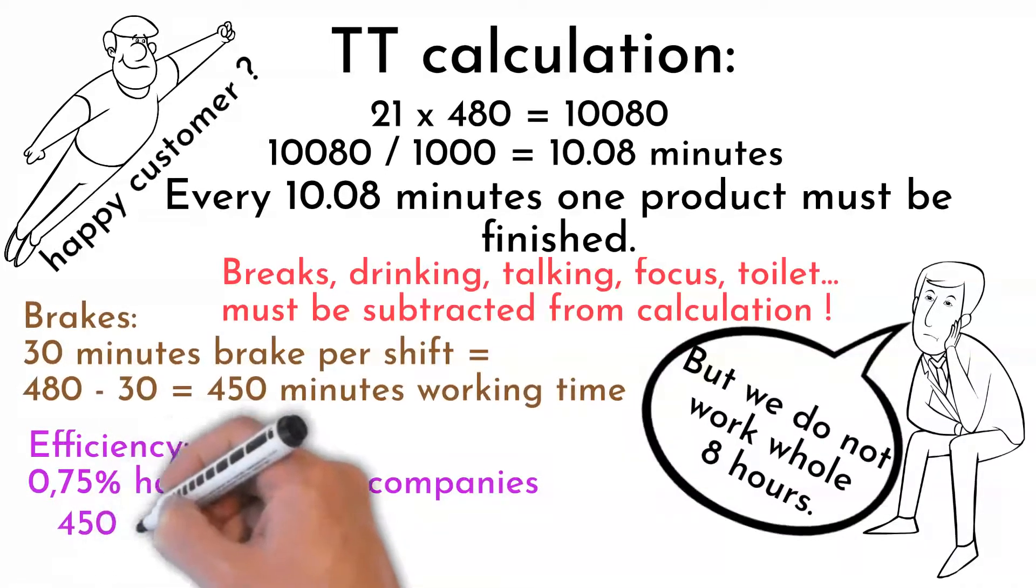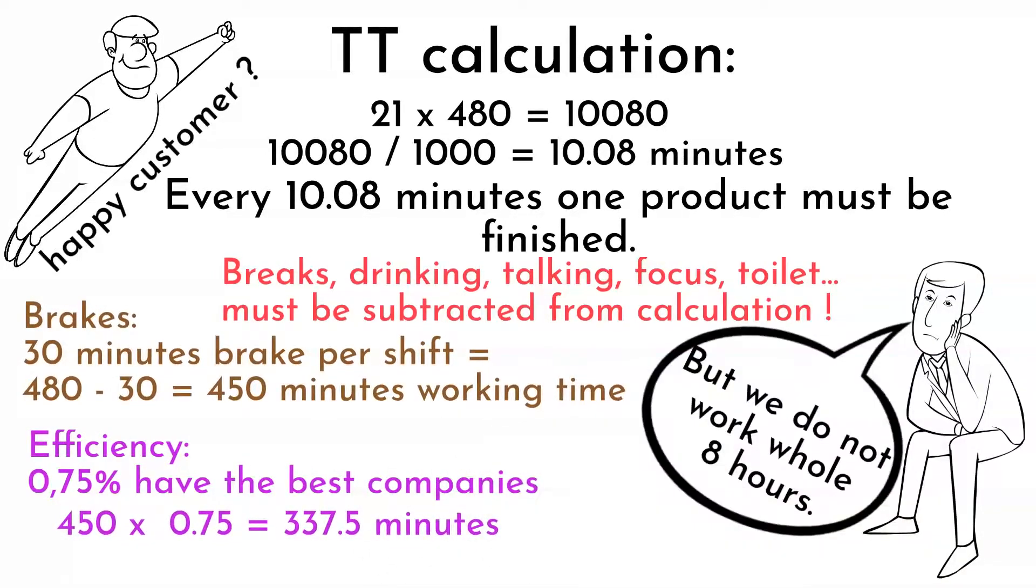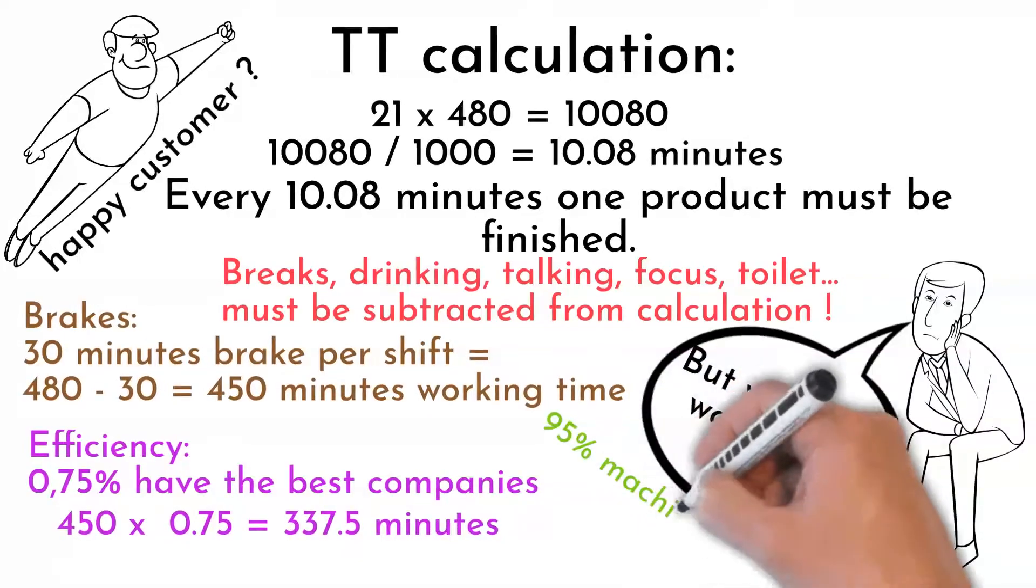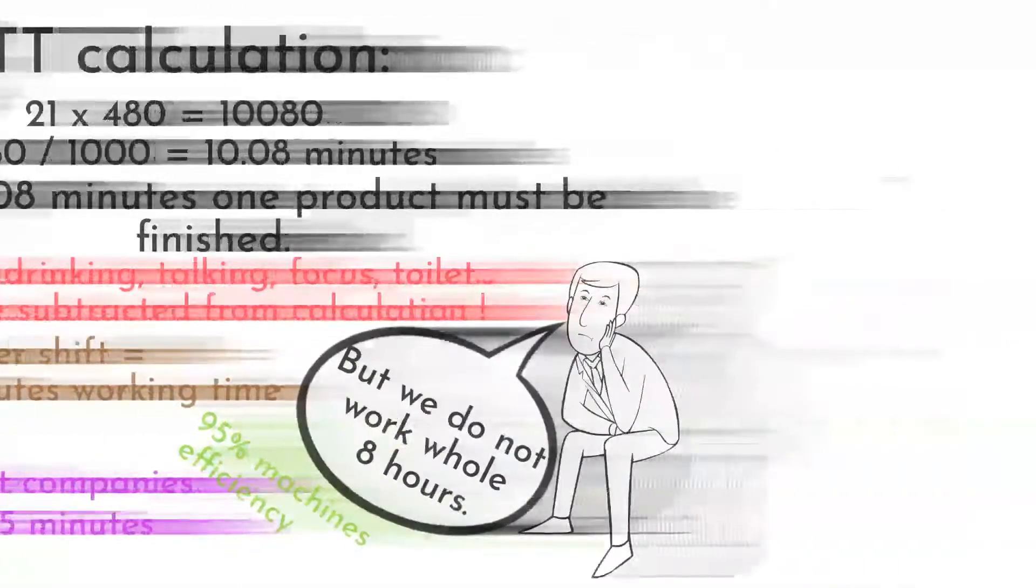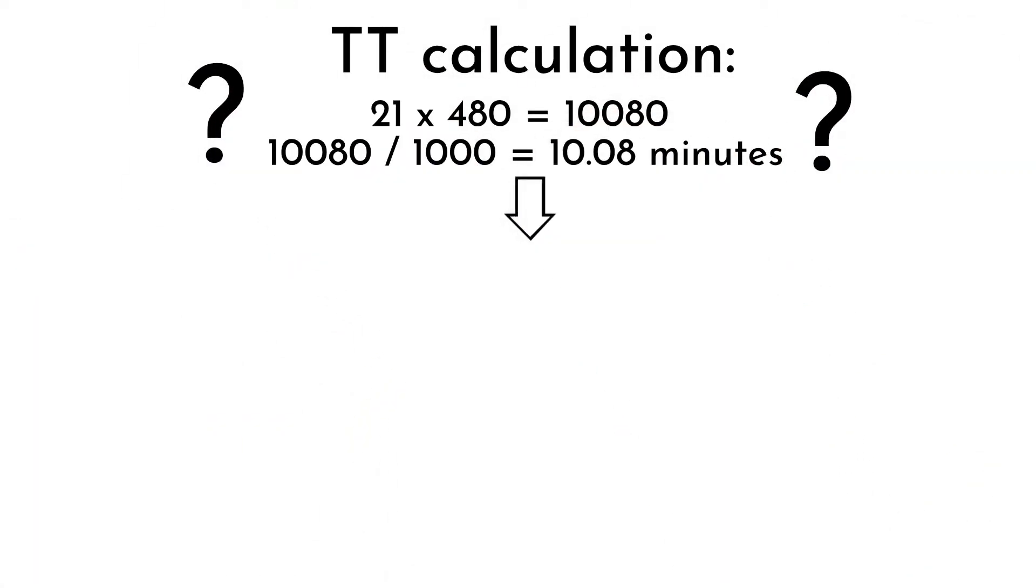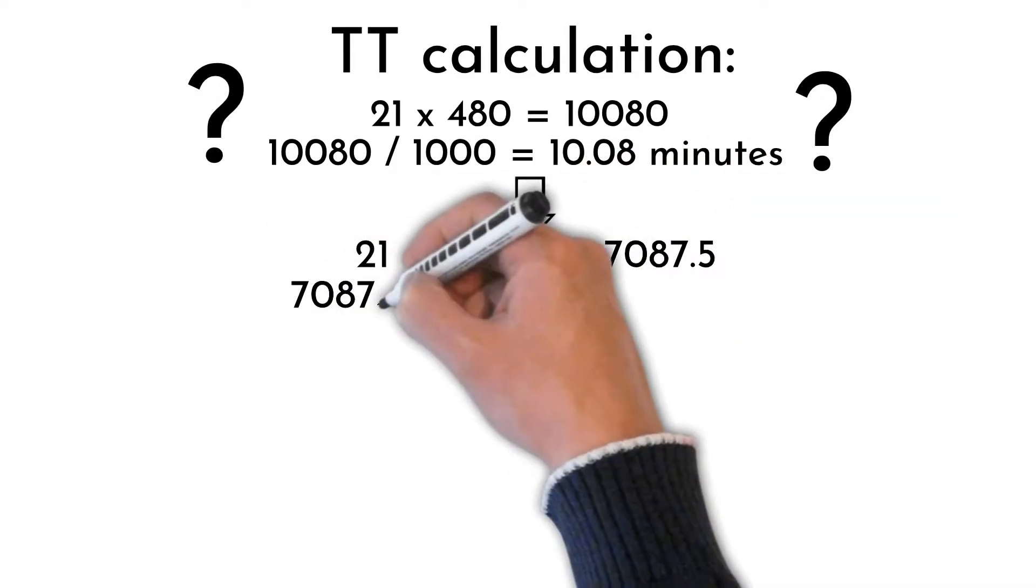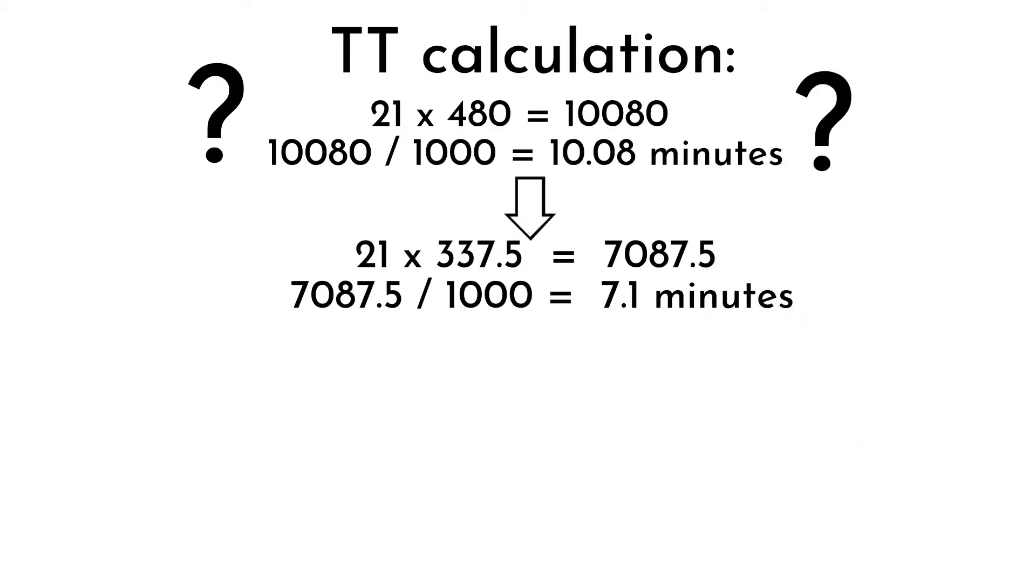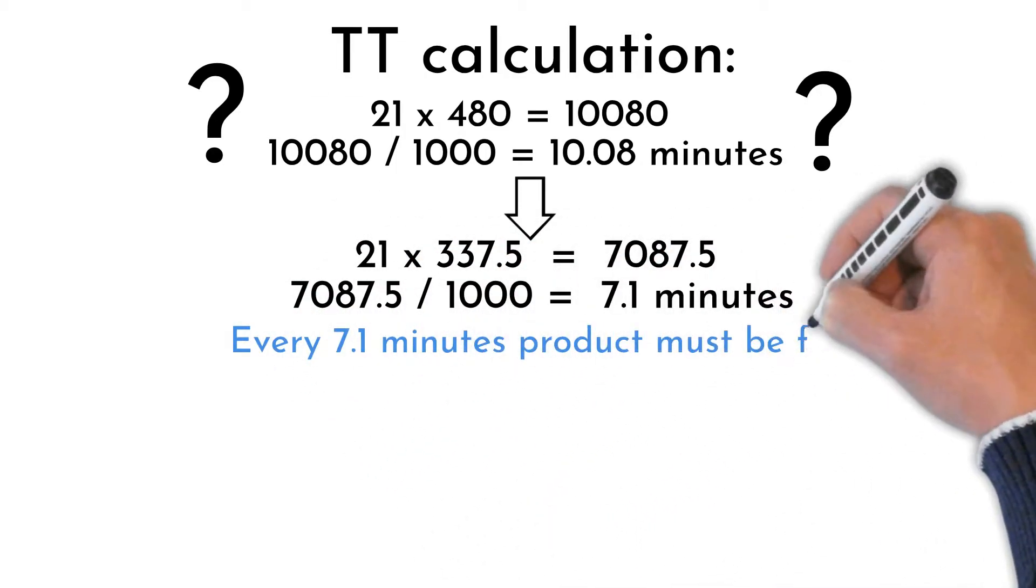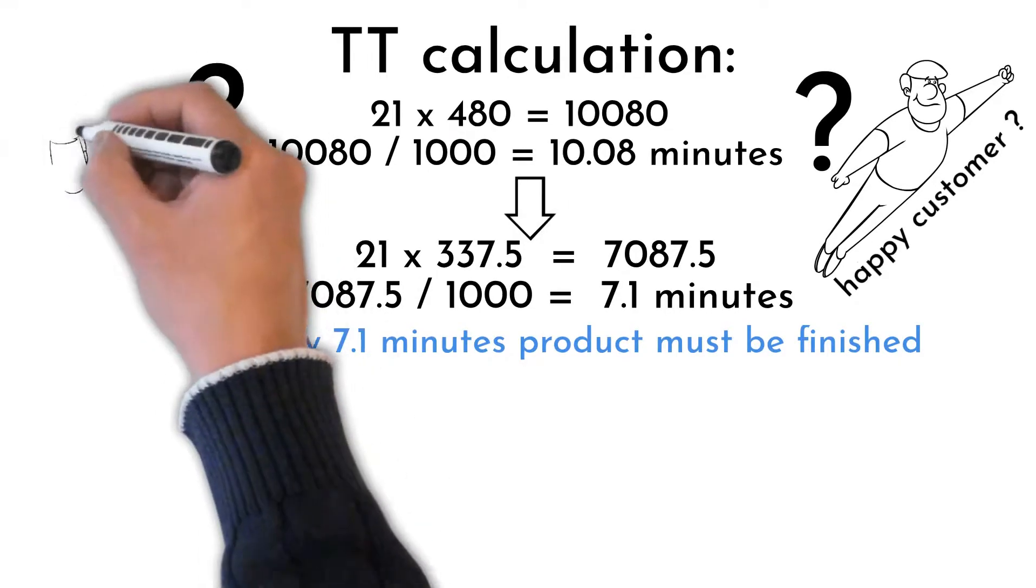In this case 450 times 0.75 equals 337.5 minutes. For machine and automated processes use 95% efficiency. Now how this have affected our takt time: 21 times 337.5 equals 7087.5 divided by 1000 equals 7.1 minutes rounded. With breaks and efficiency counted in, product must be finished every 7.1 minutes in average to fulfill customer requirement.